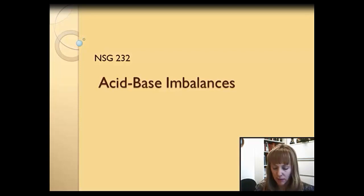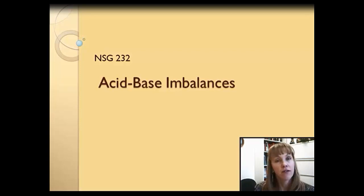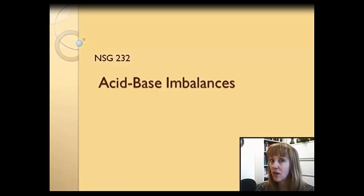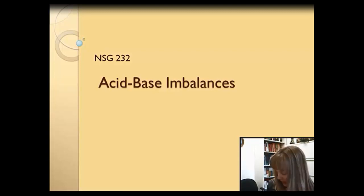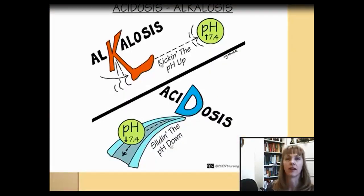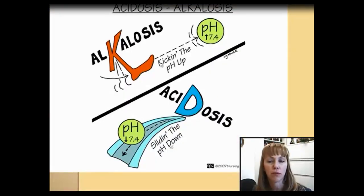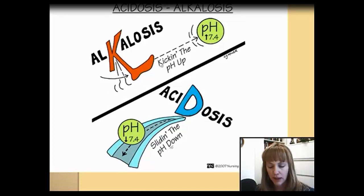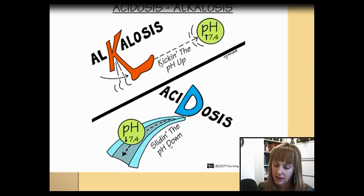Acid-base balance depends on the regulation of free hydrogen ions. The concentration of these hydrogen ions is what determines acidity or alkalinity, both of which are measured by pH. This slide from the Memory Minot Book of Nursing reminds us in graphic form that pH goes up with alkalosis and down with acidosis.